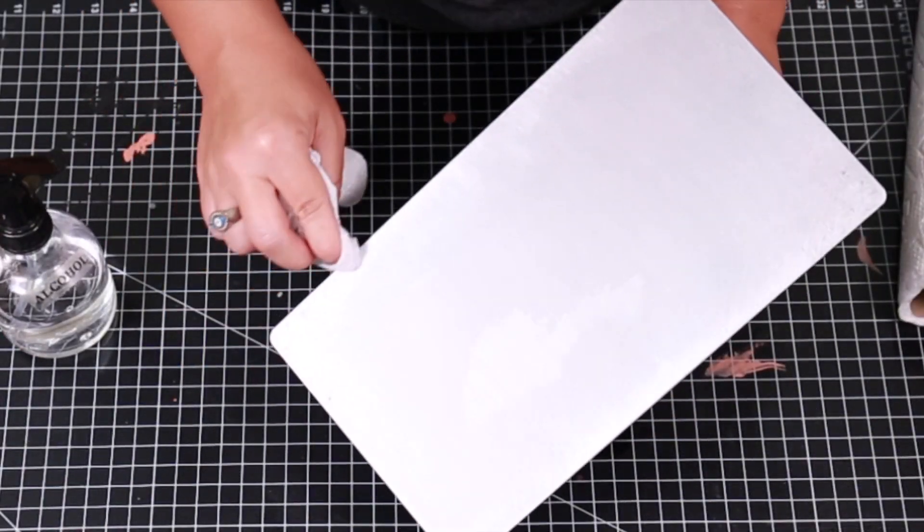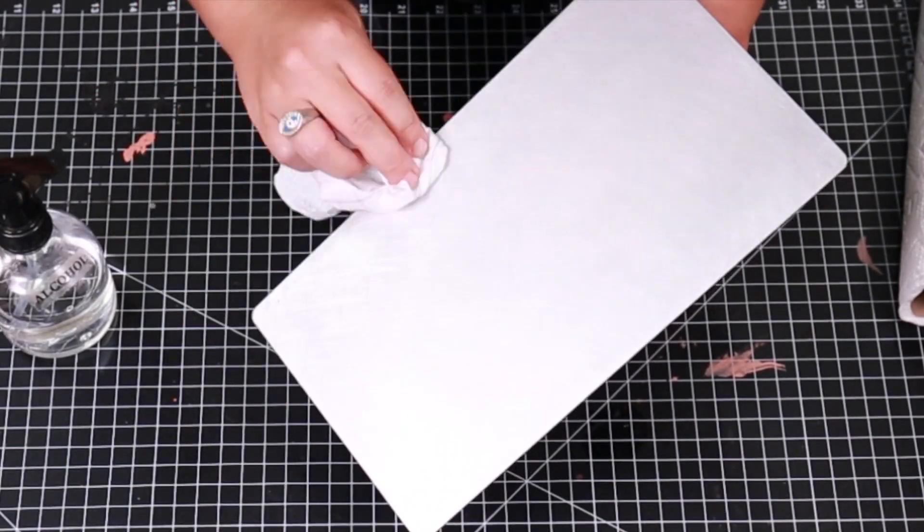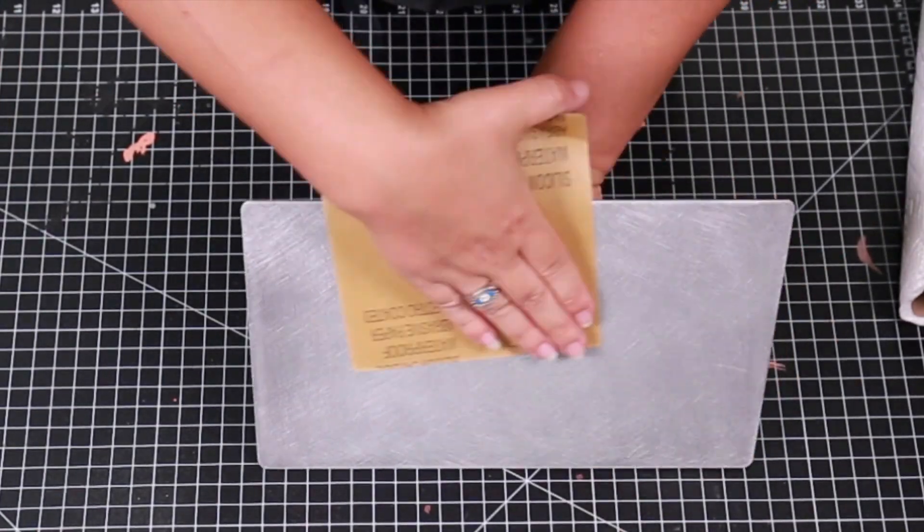And then I just peeled away any of the excess residue. And I would spray alcohol and then kind of rub it down and spray alcohol and rub it down until I pretty much got all of the residue off completely.